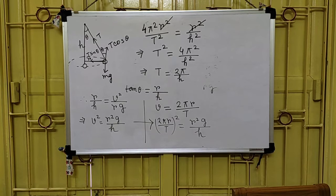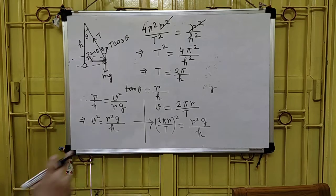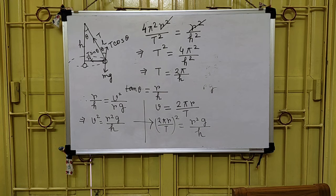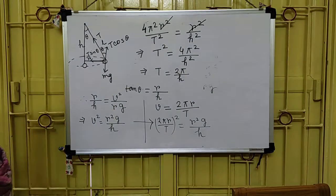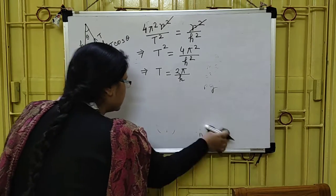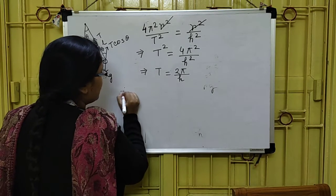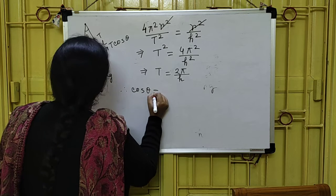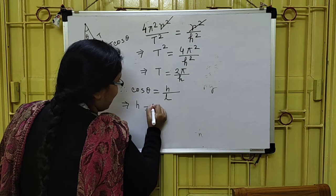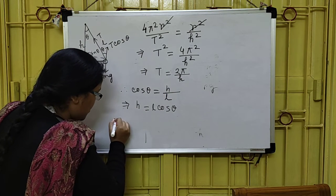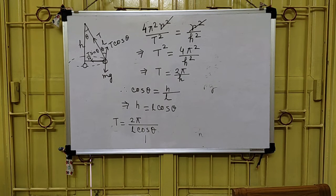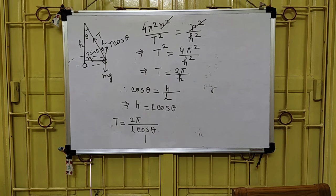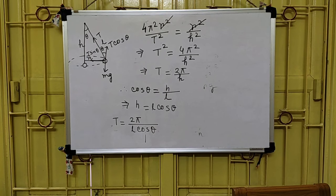Now we need to find H. The length of the string is L, as given in the question. Using the geometry, cos theta = H / L, so H = L cos theta. Substituting back, T = 2π√(L cos theta / g). So the time period of revolution is T = 2π√(L cos theta / g).